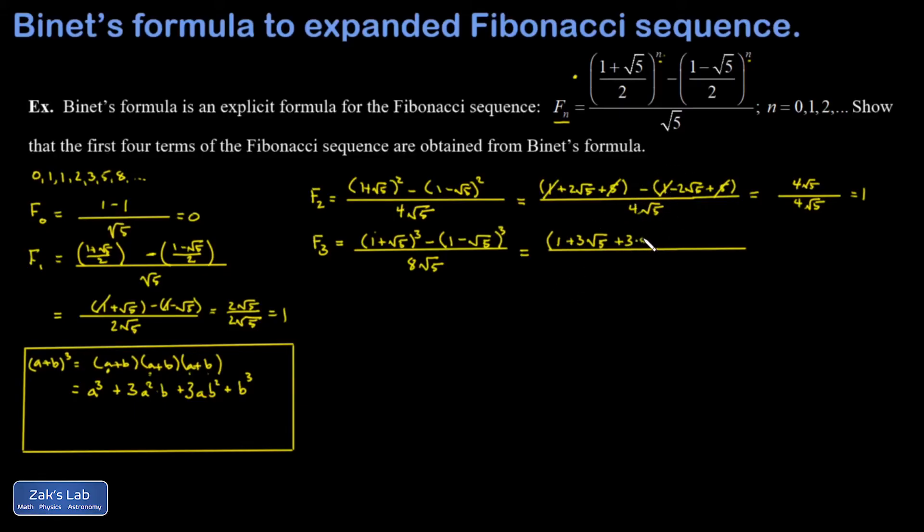I don't need to write one squared plus three times one times root five squared, which is just five plus b cubed. So root five to the third power, and I could write that as five to the three halves.